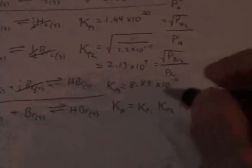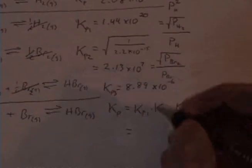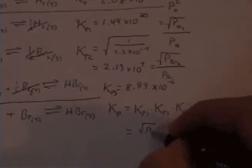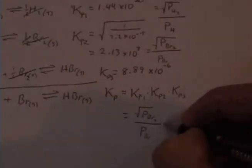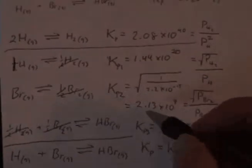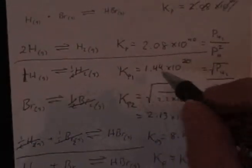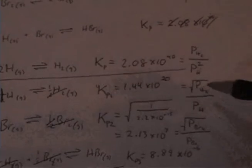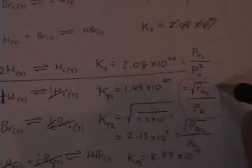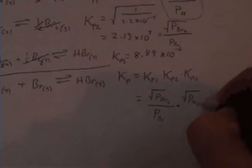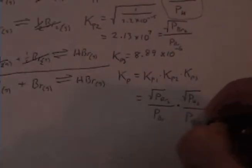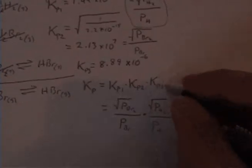And then we'll see how that works out. Because what's going to happen is, I'm going to have PBr2 over pressure Br, and then times Kp2. Kp1 is square root of PH2 divided by PH, and then times Kp3, which is HBr, the pressure of HBr...